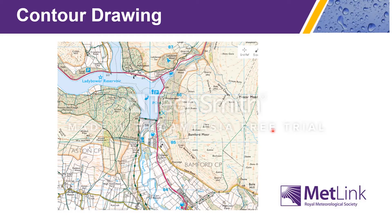If you've ever looked at an ordnance survey map, you'll have seen the contours — lines joining places which are the same height above sea level. You can spot high places, low places, and places where the contours are close together and the slopes are steep. The contours are drawn at equal intervals; there might be one every 5 metres or 10 metres.